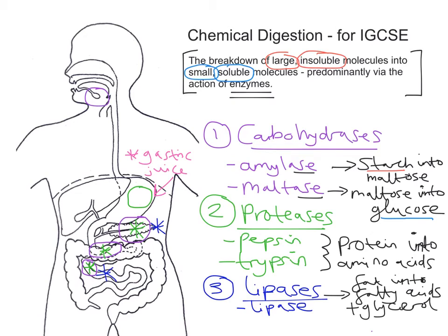So we have three big categories of enzymes: carbohydrases, proteases, and lipases. They all act on large insoluble molecules — starch, protein, and fat — and break them down into small soluble molecules: glucose, amino acids, fatty acids, and glycerol.